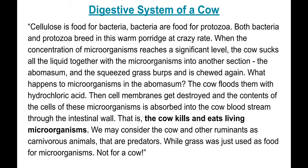So the cow kills and eats living microorganisms — not grass. The cow does not consume grass. Bacteria eat grass and the cow eats living organisms — bacteria and protozoa. We may consider cows and other ruminants as carnivorous animals. Grass is merely used as food for these microorganisms.